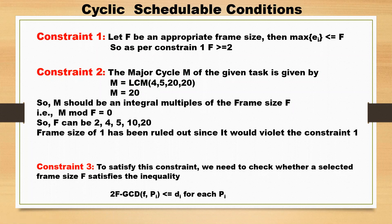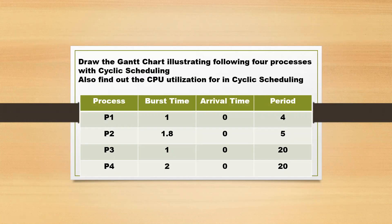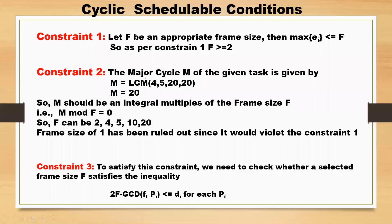We have three constraints. Constraint one: if f is an appropriate frame size, then max of ei must be less than or equal to f. It means the frame size should be at minimum 2, since the maximum burst time is 2 milliseconds.